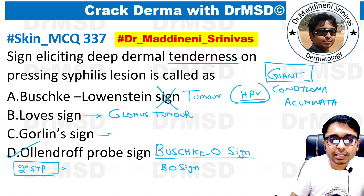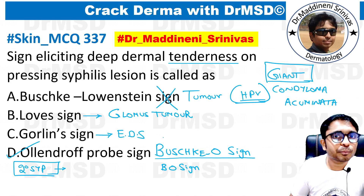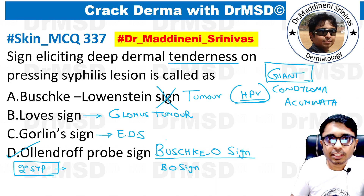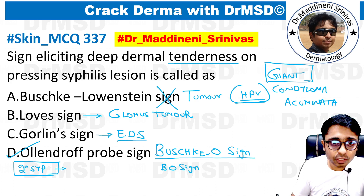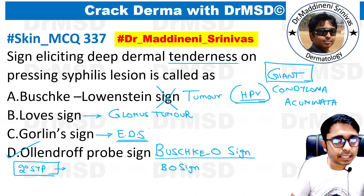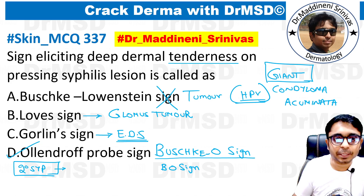Coming to Gorlin sign, a very interesting sign seen in Ehlers-Danlos syndrome: patients with Ehlers-Danlos syndrome can touch the tip of the nose with their tongue, which we cannot normally do. Because of this observation, it was given the name Gorlin sign.